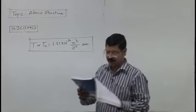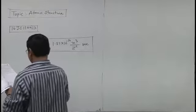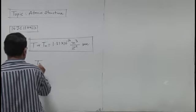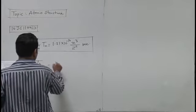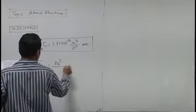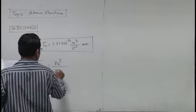To yahaan kya kaha gaya hai ki ta over tb, to yahaan kya ho jayega: na cube za square